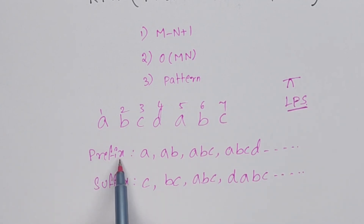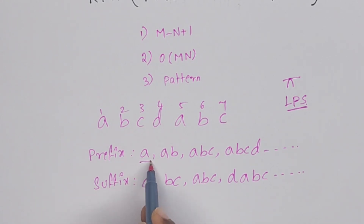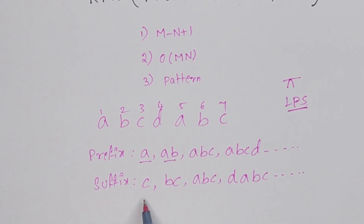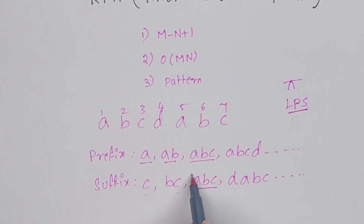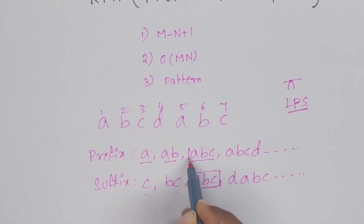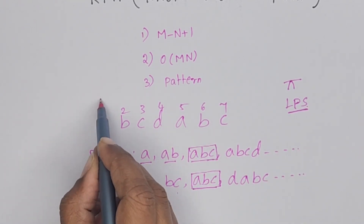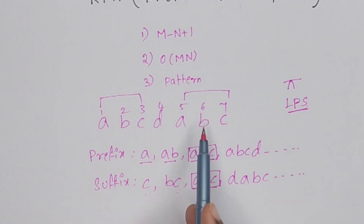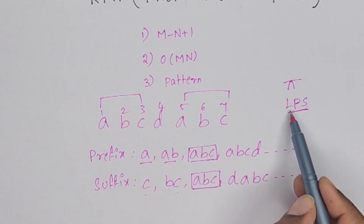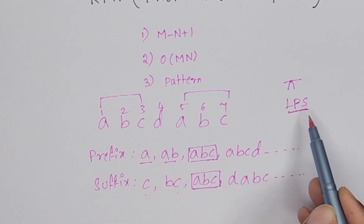That is the reason I have written prefix and suffix — we have to check if any prefix is repeating in the suffix or not. The first prefix is A. Is A repeating in suffix? No. Next, AB — is AB repeating in suffix? No. Next, ABC — yes, ABC is repeating in the suffix. So this is the LPS: longest prefix same as suffix.